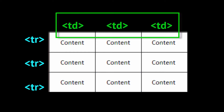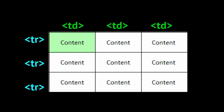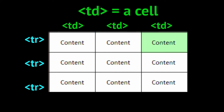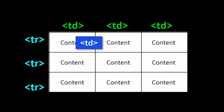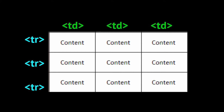These TD tags represent each cell — they don't represent the whole column all the way down, they represent a single cell. TD stands for table data. So each cell will have an opening TD and an ending TD. All of these will be enclosed in a starting table tag and a closing table tag.